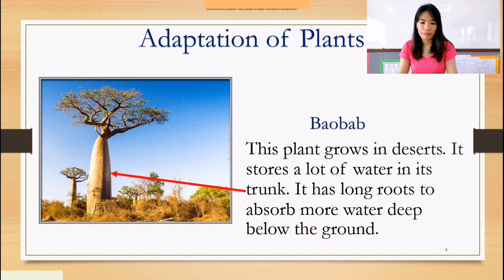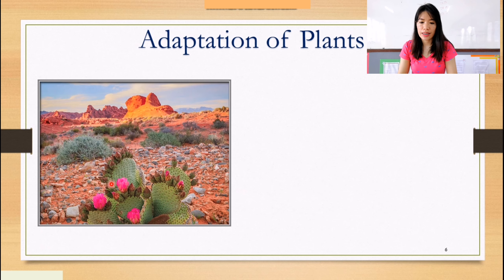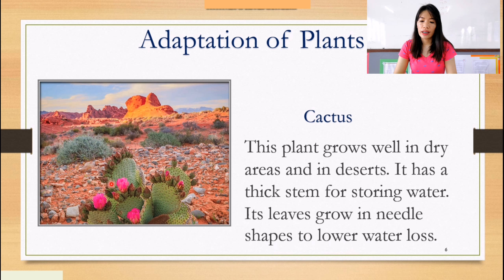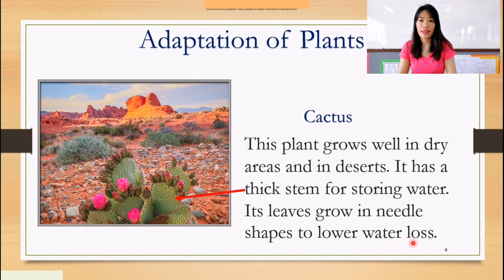The next plant is cactus. How does the cactus adapt to its environment? This plant grows well in dry areas and in deserts. It has a thick stem for storing water, and its leaves grow in needle shapes to lower water loss. That is the thick stem of the cactus.